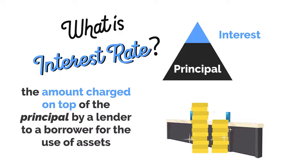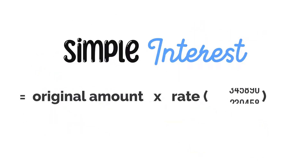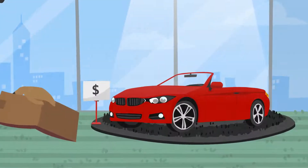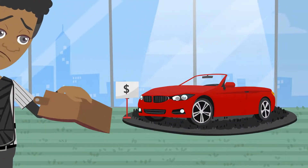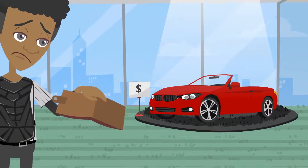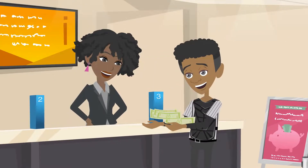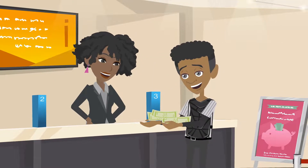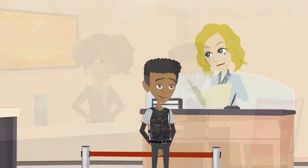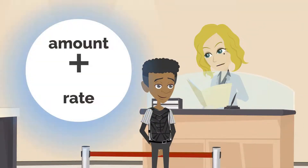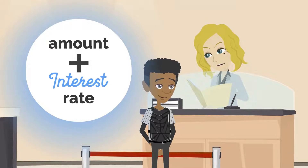Simple interest is calculated on the principal, or the original loan amount. For example, Little Herby wants to buy a car but he doesn't have the money, so he goes to the bank to borrow the money to purchase the car. The bank lends Little Herby the money but also charges a fee, which is called interest, attached to a certain rate called the interest rate.